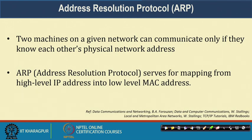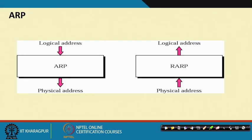We also discussed proxy ARP and the different components of the ARP package that make it possible, including the caching of address mappings so that subsequent requests can be addressed more easily. This is the well-known diagram: logical address or IP address uses ARP to get to the physical address, and physical address uses RARP to get back to the logical address.